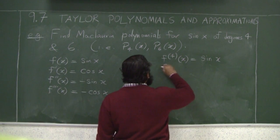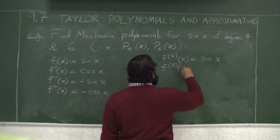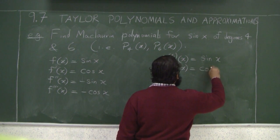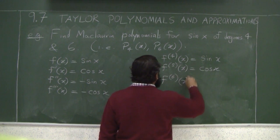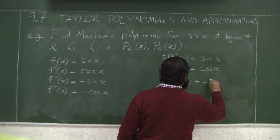So then we just continue. So the fifth derivative is cosine. The sixth derivative is negative sine.